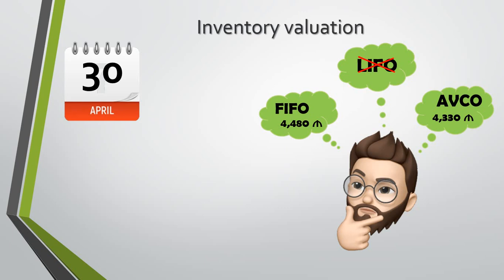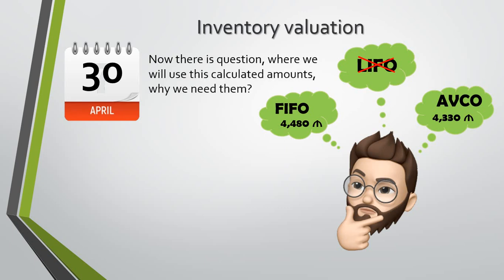Now we have two different end-of-period balances calculated by two different methods. In the next video, we'll answer the questions of where we use these figures in our financial statements and how to use them in the calculation of the cost of sold goods. Below, you can find the link for the next video.